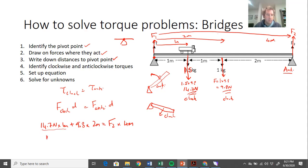14.7 times 1 is 14.7 newton meters, and 9.8 times 2 is 19.6 newton meters, equals F2 times 4.